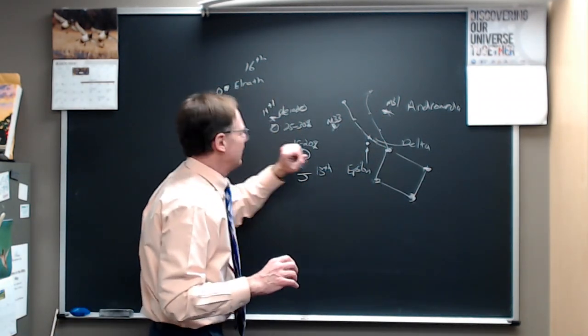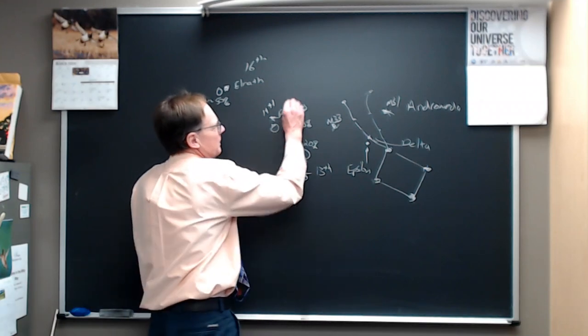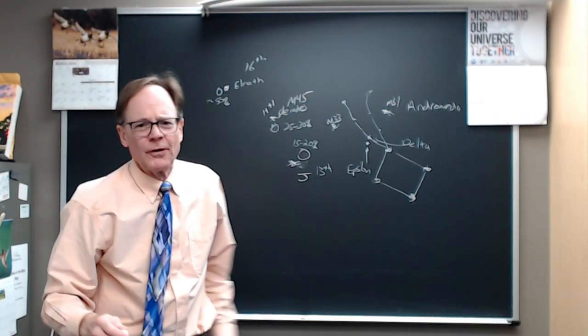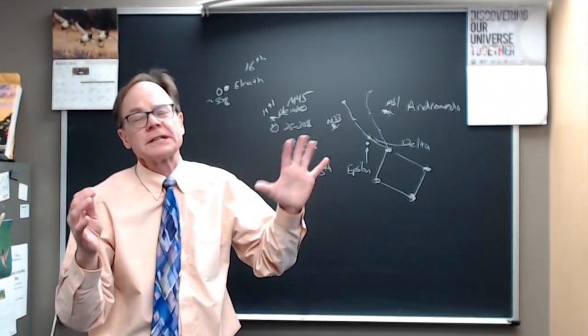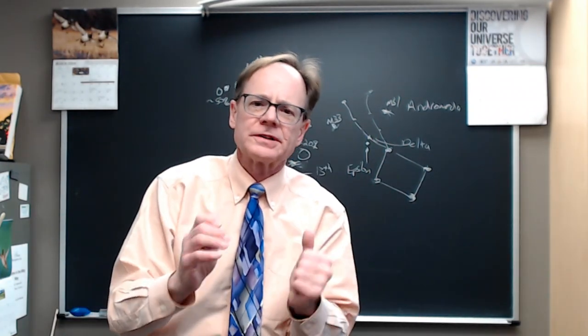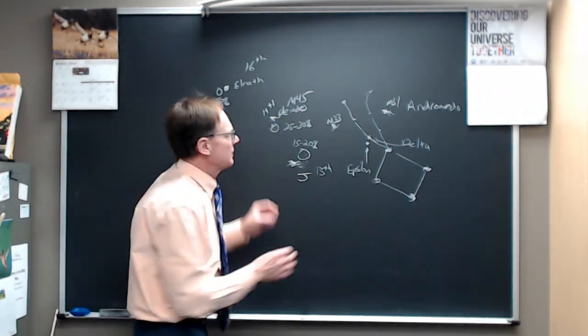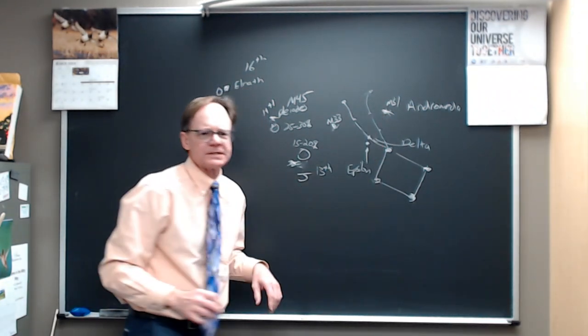M31, Andromeda, and M45, the Pleiades in the Messier number. M45, the Pleiades, those are easily, relatively speaking, you've got good, dark, clear skies without a lot of moisture, those objects are the most likely that you'll be able to see with your naked eye.